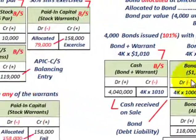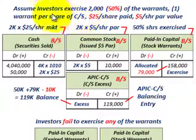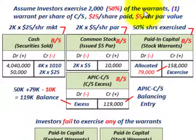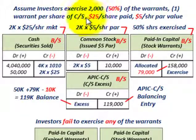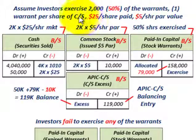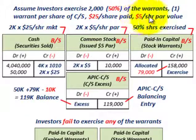For Case 1, we assume the investors exercised 2,000 of these warrants — 50% of the warrants outstanding with those bonds. There's one warrant per share of common stock, so one warrant buys one share of common stock. The common stock will be sold at $25 per share, which is what stockholders pay back to the company for the common stock, and the common stock has a $5 per share par value.